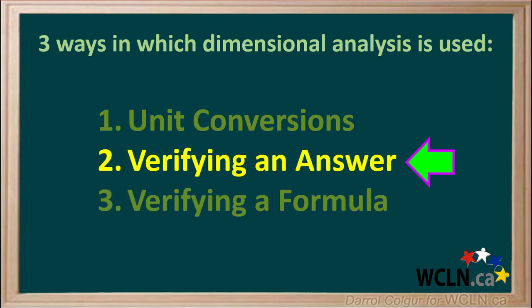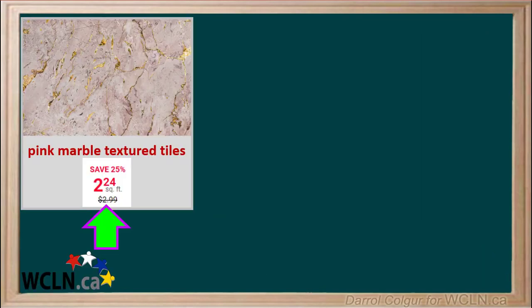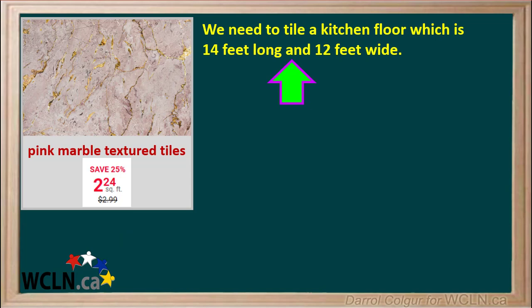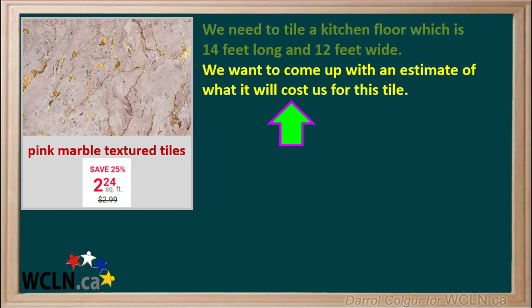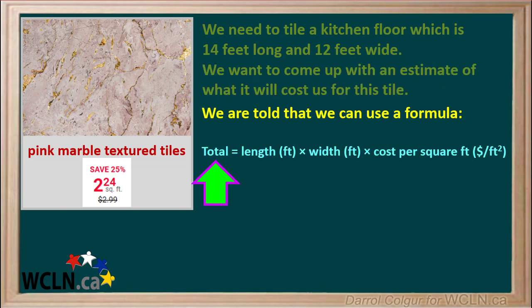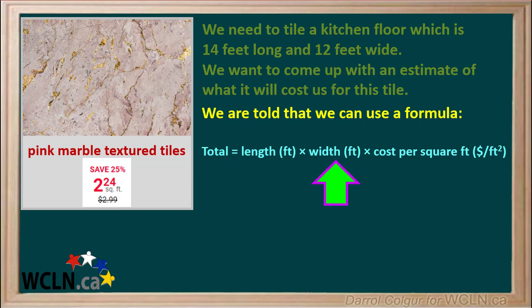Here we'll look at how we use dimensional analysis to verify an answer. Some tiles are advertised in a store flyer as having a sale price of $2.24 per square foot. We need to tile a kitchen floor which is 14 feet long and 12 feet wide, and we want to estimate the total cost. We're told the formula is: total cost equals length in feet times width in feet times cost per square foot in dollars per square foot.